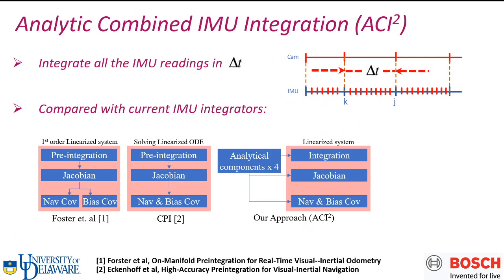Our proposed analytic combined IMU integrator is to integrate IMU measurements between time step K and time step G in the interval of delta t. There are also other integrators, like the discrete integrator Forster's and Eckenhoff's continuous preintegration CPI. The Forster's won't compute the correlation between navigation covariance and bias covariance.